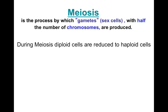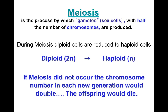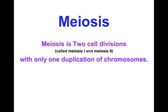Meiosis is similar to mitosis, except we are going to have two different divisions — meiosis one and meiosis two — and a lot of the steps will be very similar to what we saw in mitosis. We'll have prophase, metaphase, anaphase, telophase, and even an interphase. We are going to take a diploid cell, a 2N cell, and make a haploid. The importance of this is to make sure we are giving the next generation the right number of chromosomes.